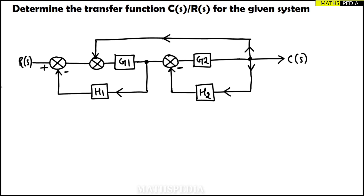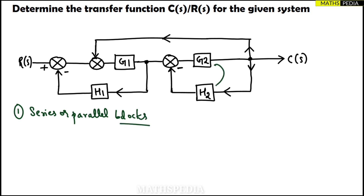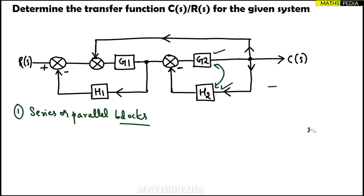Always remember, the first step should be to look for series or parallel blocks. In this problem, if you observe, there are no series or parallel blocks. Don't get confused — these two are not in parallel. Always remember, these are loops. One gain is there, a transfer function is there — this is nothing but feedback. They are called minor loops.